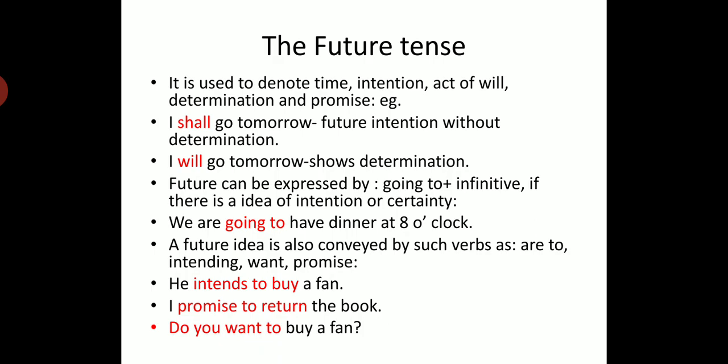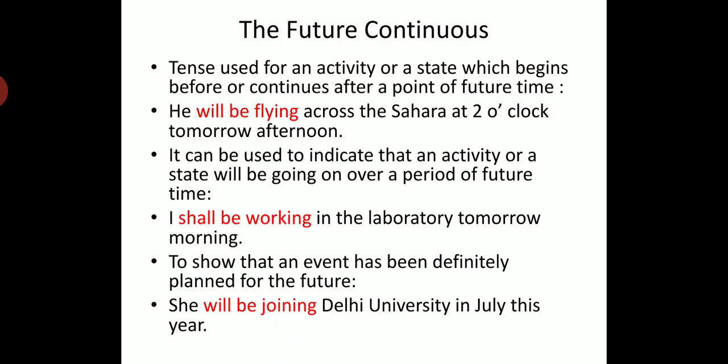Future continuous tense is used for an activity or state which begins before or continues after a point of future time. For example, 'He will be flying across the Sahara at two o'clock tomorrow afternoon,' or 'I shall be working in the laboratory tomorrow morning.' It can also show a definitively planned future event — for example, 'She will be joining Delhi University in July this year,' indicating certainty.